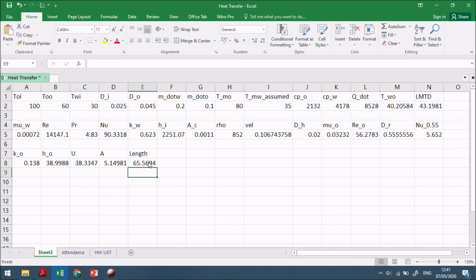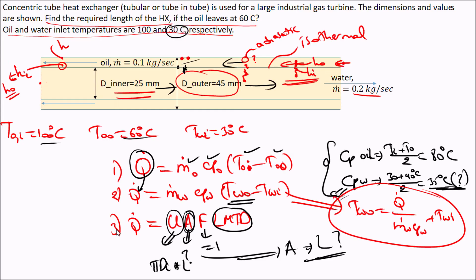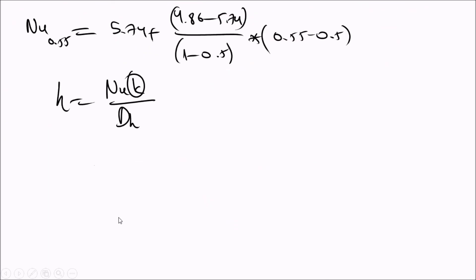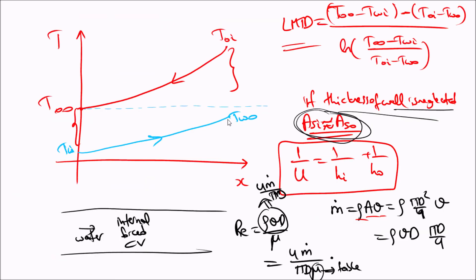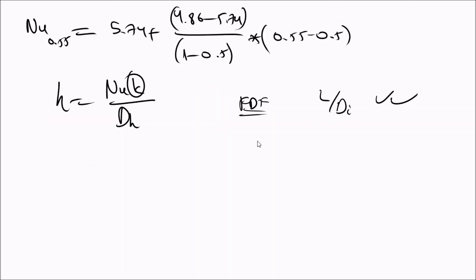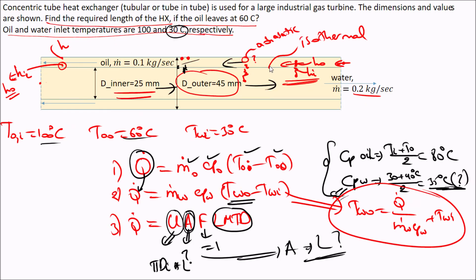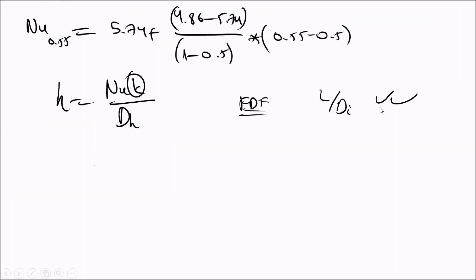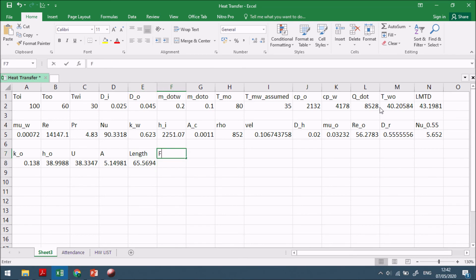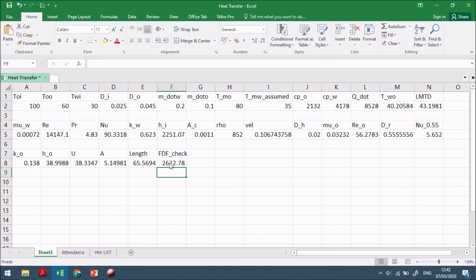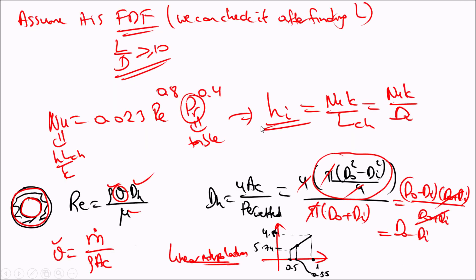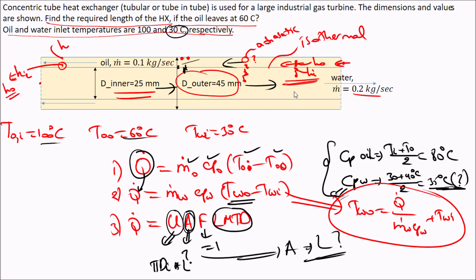The length comes out to approximately 66 meters. Now checking assumptions: for the fully developed flow (FDF) assumption, L/D_inner is computed. The result is much greater than 10, confirming the FDF assumption is valid.